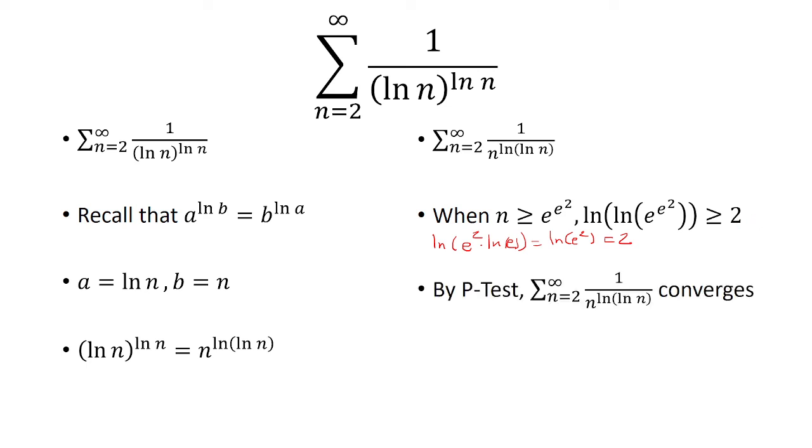And by the p-test, we know that the sum from n equals 2 to infinity of 1 over n raised to ln of ln of n power converges, since it's greater than or equal to 2. And so we say that the original sum also converges.